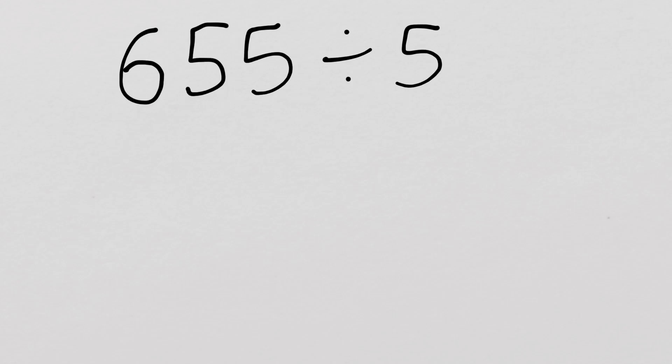Now, if we look at another question. 655 divided by 5. Now because we're dividing by 5, we know we're going to need our 5 times tables. So again, draw a bus stop. In goes the big number, the dividend. On the outside goes the divisor.